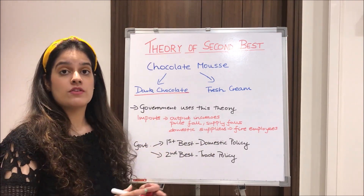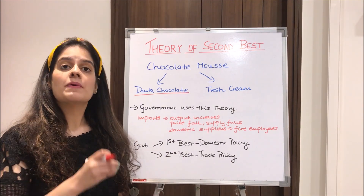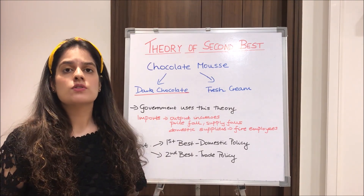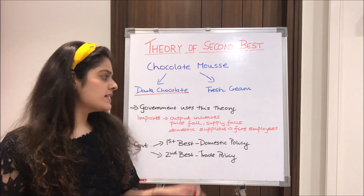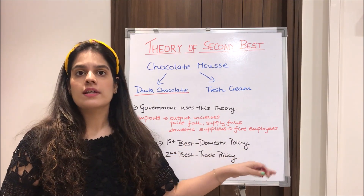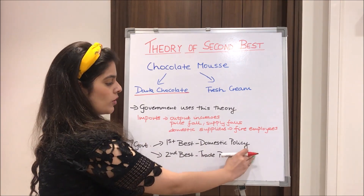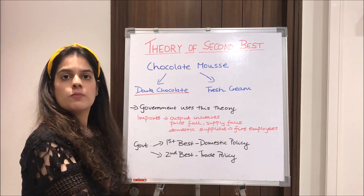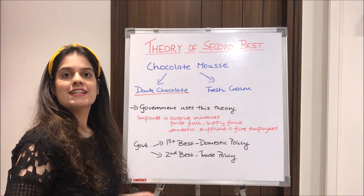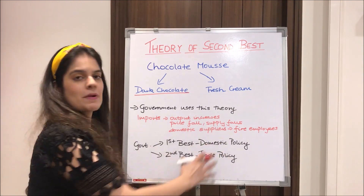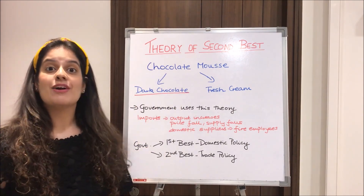In real life, governments use this theory. For example, sometimes there are a lot of imports in the market, increasing supply and causing prices to fall. Domestic producers, facing lower prices, want to cut variable costs and may fire employees — causing unemployment. The government then has two options: it can use trade policy by implementing tariffs to reduce imports, or it can use domestic policy by giving subsidies to domestic suppliers so that they don't suffer.